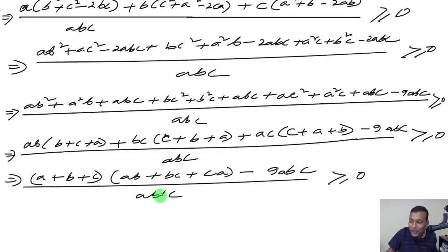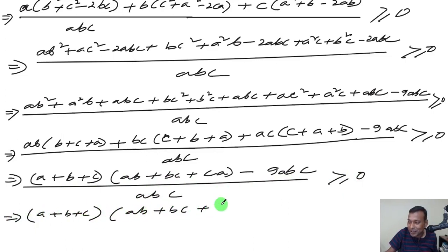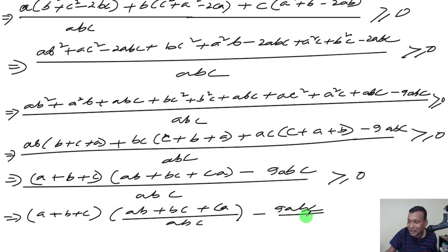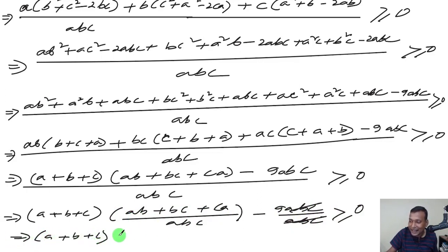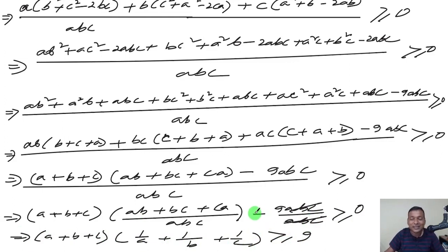Dividing through by abc: (a + b + c)(ab + bc + ca)/abc - 9 ≥ 0. This simplifies to (a + b + c)(1/a + 1/b + 1/c) ≥ 9, since the -9 moves to the right-hand side to become +9.